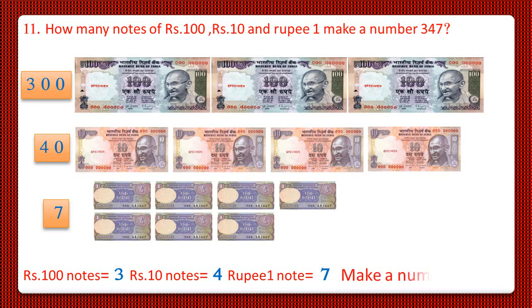So, to make number 347, 3 hundred rupee notes are needed, 4 ten rupee notes and 7 one rupee notes.